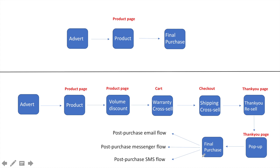On top of that — though not covered in this video — you should have a post-purchase email flow, at least a three-part sequence trying to sell more products. Also use a post-purchase Facebook Messenger flow sending promotions, and a post-purchase SMS flow with text messages to get them to buy more products shortly after they've just purchased.